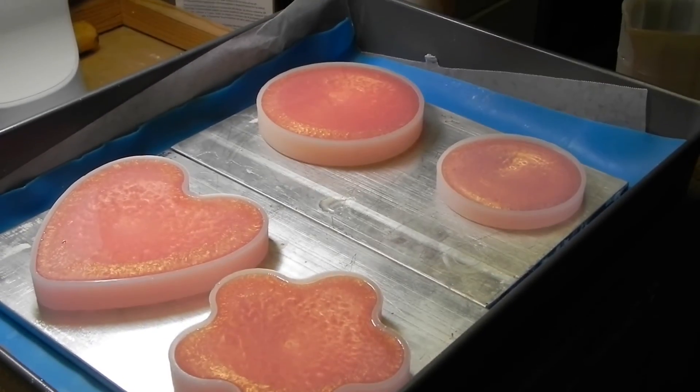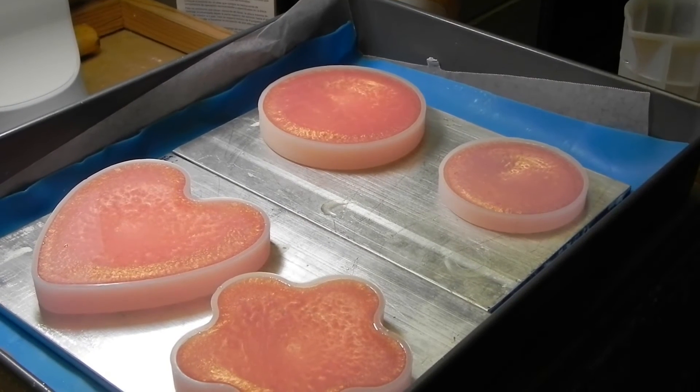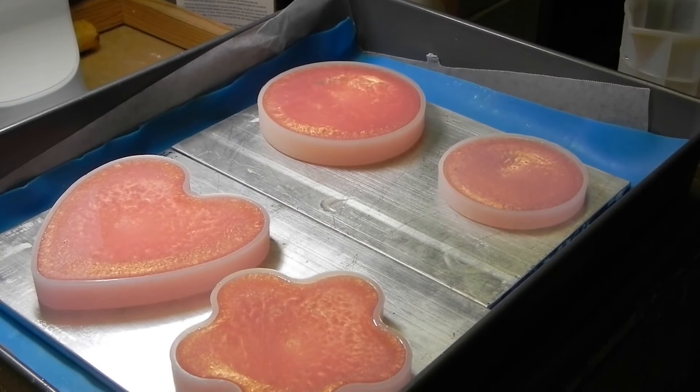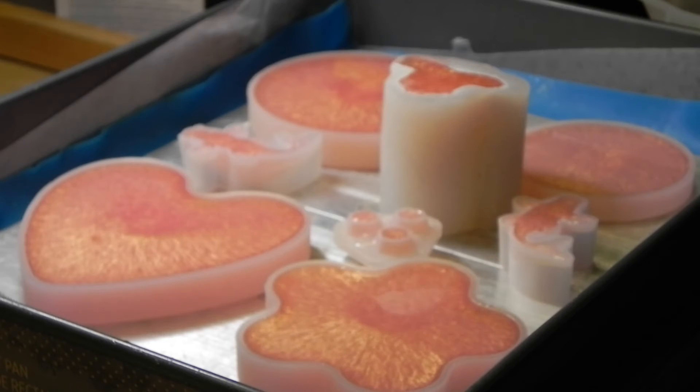There are two methods if you want to eliminate the last of the visible bubbles. Spritz some rubbing alcohol over the top and it will pop anything on the surface. You can also use a heat gun. Keep it at a distance from the molds, always in motion to keep from overheating and melting the molds.